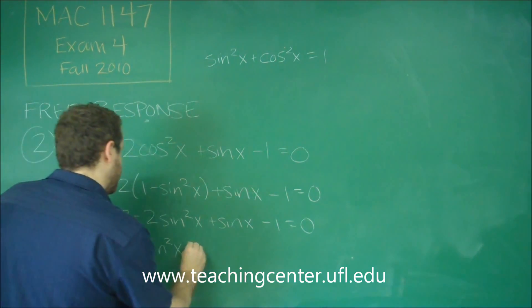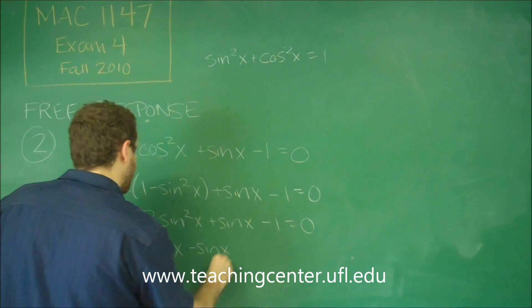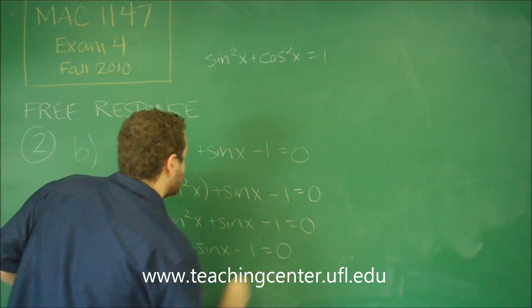Instead of plus sine x, let's put in negative sine x, and we would have 2 minus 1, which is 1, but we're flipping the signs, so we get negative 1.